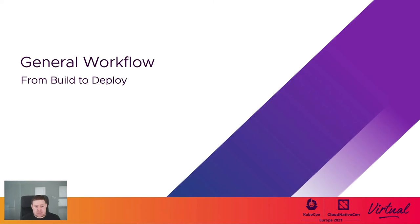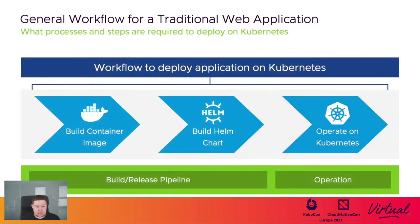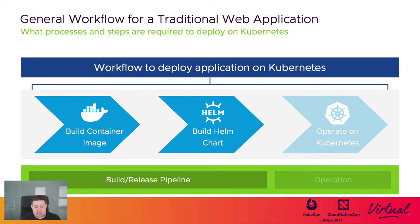Now, let's briefly revisit how you would proceed if you wanted to deploy a traditional web application on top of Kubernetes. Here you can see a list of basic steps you would need to follow. You will need to first build a container image, build a Helm chart, and then deploy and operate on Kubernetes. For this talk, we will be mostly focusing on the building process for container images and charts, as the base step for running an application on Kubernetes.